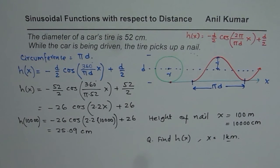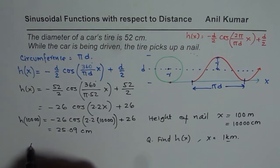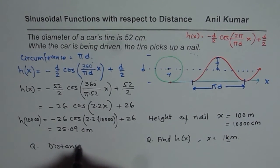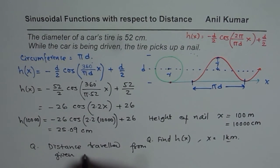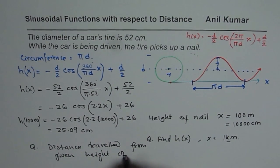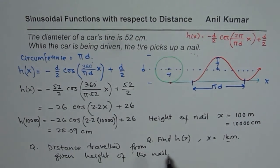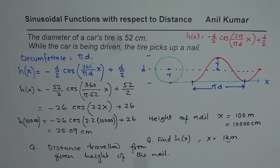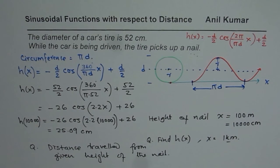In the next video, we will try to find distance traveled from given height of the nail. If the nail is 20 centimeters above, how much has the tire moved? We'll do the reverse in the next video. You can try that also. Watch my next video to see how to find x when we are given h of x. That is the reverse calculation, which we'll do in the next video. I hope that helps. Thank you and all the best.